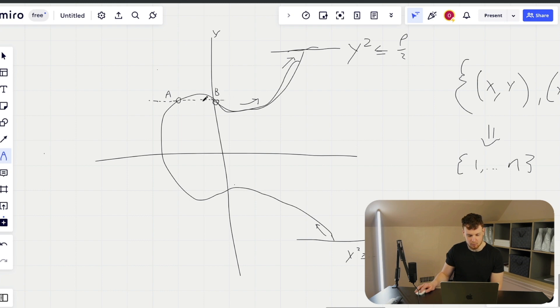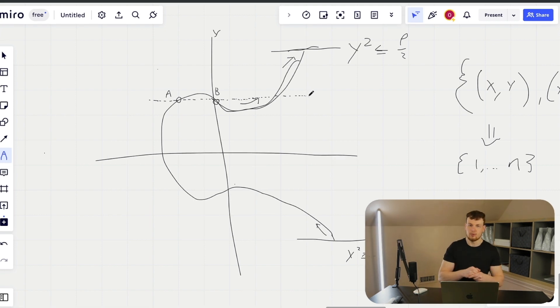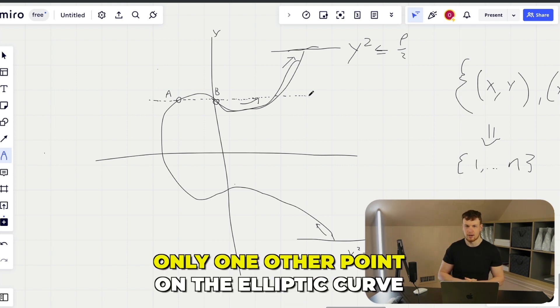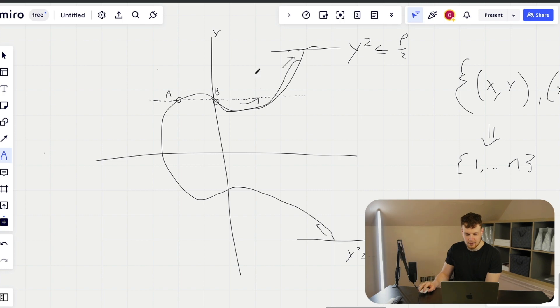So these are two members of the secp256k1 group. Now we're going to add them together. So to add them together, here's what we're going to do: we're going to draw the line that intersects both of these points. Let's just pretend like that actually intersects. And by the characteristic of an elliptic curve is that when you intersect two points, you're actually guaranteed to always intersect only one other point on the elliptic curve. So what this gives us is this third point right here.